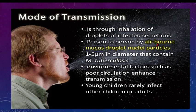Environmental factors such as poor ventilation and overcrowding enhance transmission. In small closed rooms without ventilation, if a person sneezes without covering their mouth, tuberculosis spreads more rapidly. Importantly, young children rarely infect other children or adults. However, adults can very commonly infect children. Infection is spread by tuberculosis patients who discharge tubercle bacilli in their sputum or nasopharyngeal secretions.